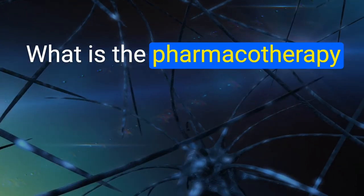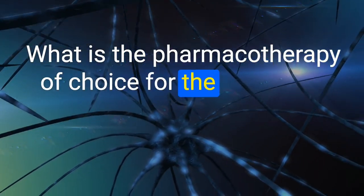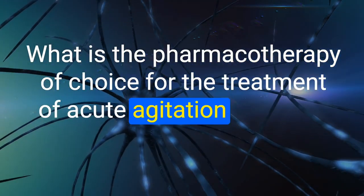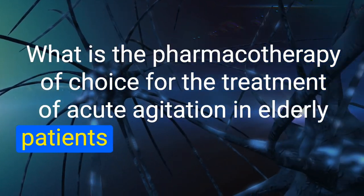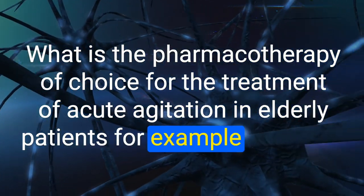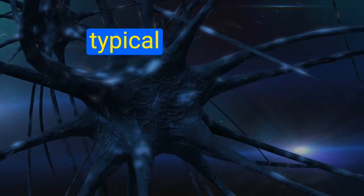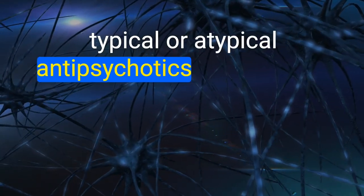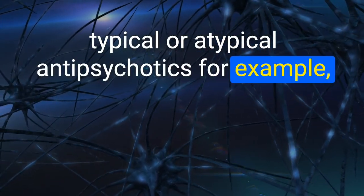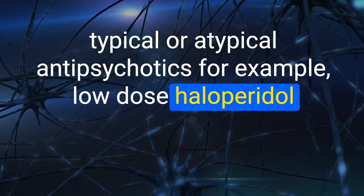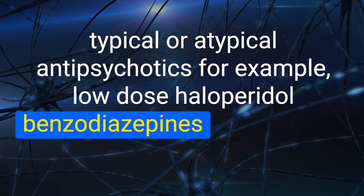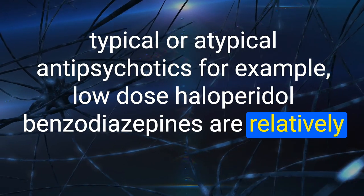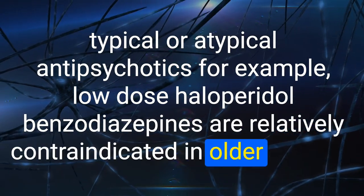83. What is the pharmacotherapy of choice for acute agitation in elderly patients (e.g., delirium)? Typical or atypical antipsychotics, for example low-dose haloperidol. Benzodiazepines are relatively contraindicated in older patients.